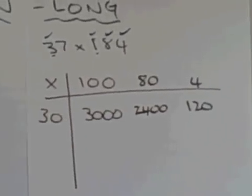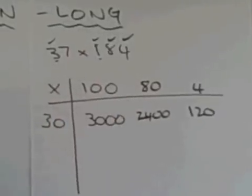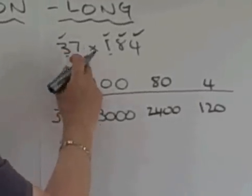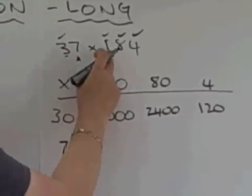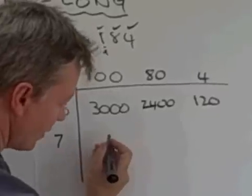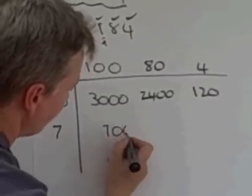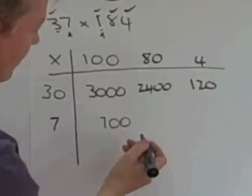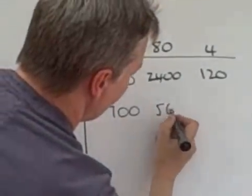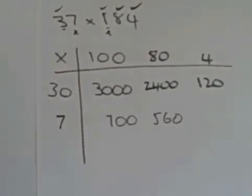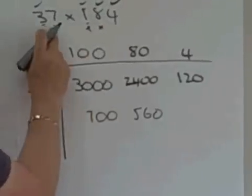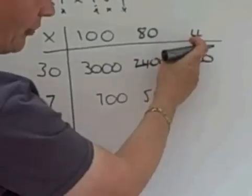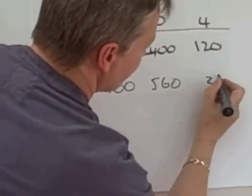So, now what I've got to do is I've got to deal with the units and do exactly the same thing. So, I'm going to put seven there. And seven, there it is, times 100, there it is, is 700. Seven times 80, there it is, is 560. Seven, I've dealt with the A there. Seven times four units, seven times four units is 28.